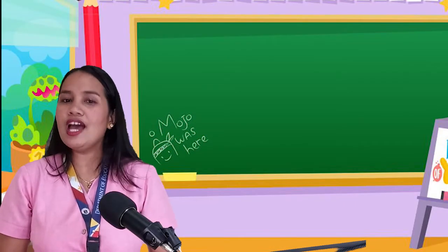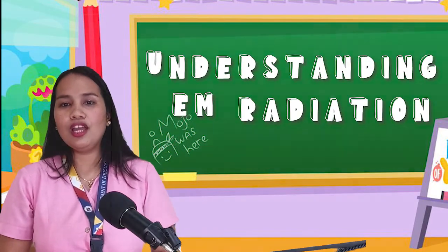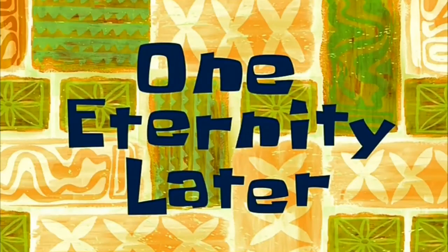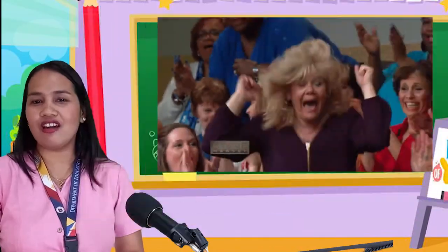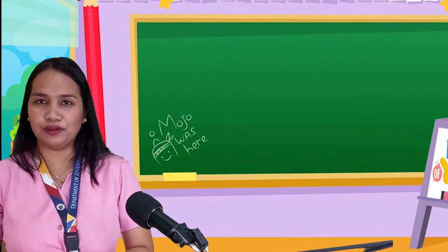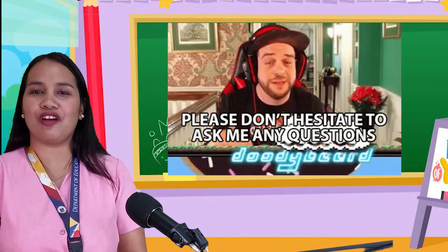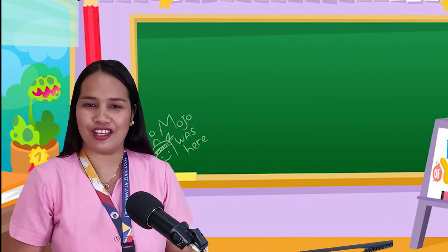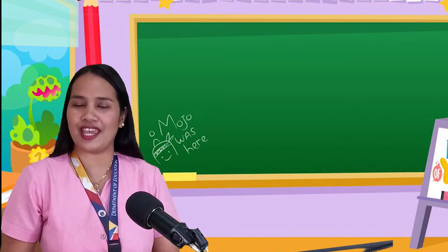To check what you have learned in our discussion, let us perform the activity: Understanding Electromagnetic Radiation. Complete the table using the information from our lesson. Did you get the correct answer? We are done with our lesson today on the effects of electromagnetic radiation on living things and the environment. Have you learned something today? For your assignment, read and answer the additional activities found in your module. If you have questions or points for clarification, please don't hesitate to contact your science teacher. Congratulations! You have done a great job. Hopefully you can apply what you have learned in your day-to-day life. Never stop learning because life never stops teaching. Goodbye students! Have a great day!